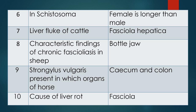Question eight: Characteristic finding of chronic fasciolosis in sheep. Remember — characteristic finding and chronic fasciolosis in sheep. The answer is bottle jaw. The head is swollen and edema of the lower mandibular space is observed, giving the appearance of bottle jaw. Question nine: Strongylus vulgaris is present in which organ of the horse? It is a very common parasite of the horse and also causes colic. The answer is cecum and colon.